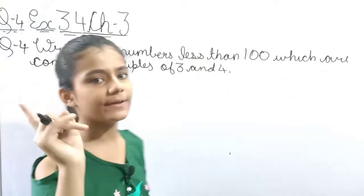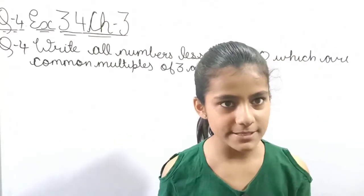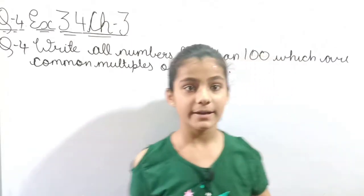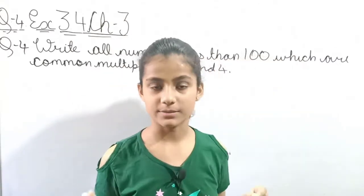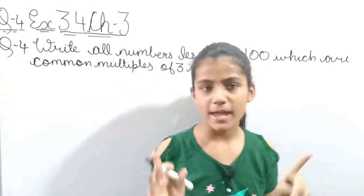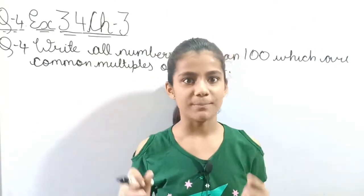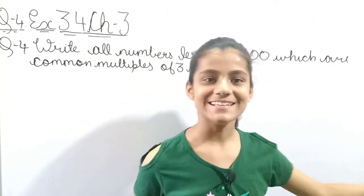We have to write multiples of 3, then multiples of 4, and then we have to write common multiples until we reach 100. So let's watch this video until the end.